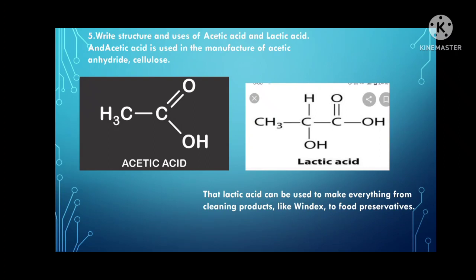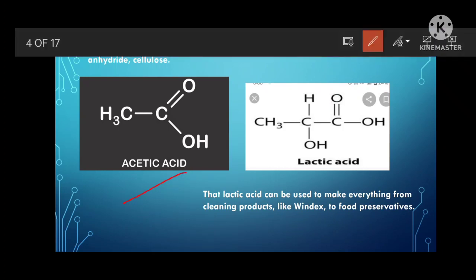Write the structure and uses of acetic acid and lactic acid. Acetic acid is used in the manufacturing of acetic anhydride and cellulose. Lactic acid can be used to make cleaning products like Windex or as a food preservative, and is used in many chemical industries. If you don't know the specific uses of any compound, write: 'It is used in pharmaceutical industries, pharmaceutical preparations, and many creams and ointments.'